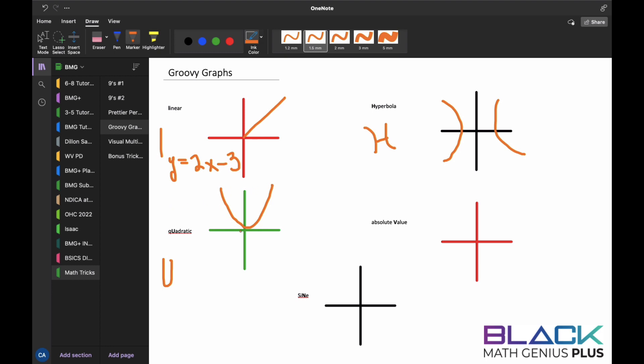And quadratic functions, we take this here. Quadratic function will be something of the form y is equal to 2x squared minus 3, just making it squared.